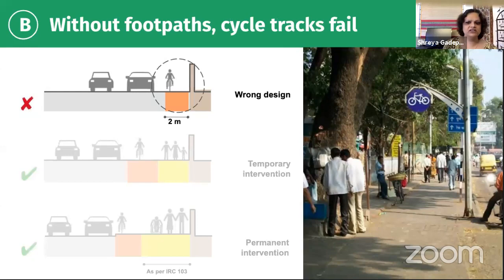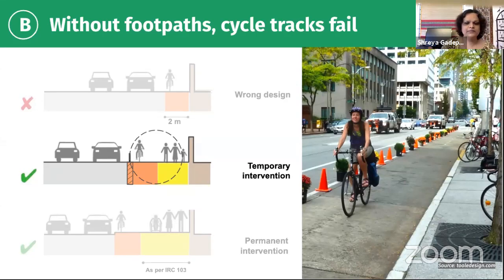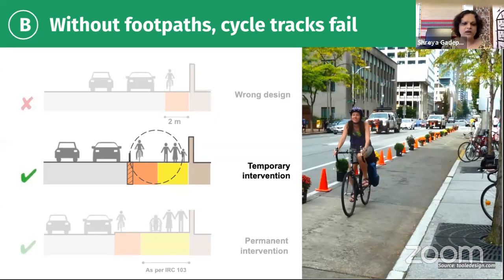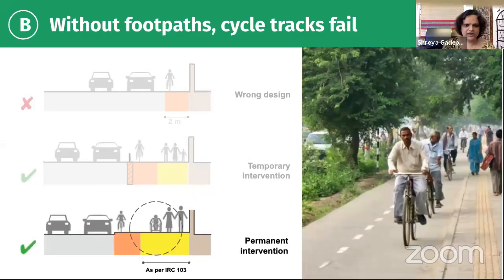The second point about segregation is: even if you have a segregated cycle track, if you do not have enough space for walking — or no space for walking — the cycle track becomes the walking space. The right way is to ensure that there is a walking space first, and only after that do you create a cycle track. Without the walking space, the cycle track is not going to be successful. We have guidelines — we will be sending the dimensions when we send you the guide next week. But the basic point is: inadequate walking space means a dead cycle track, because the cycle track becomes the footpath.